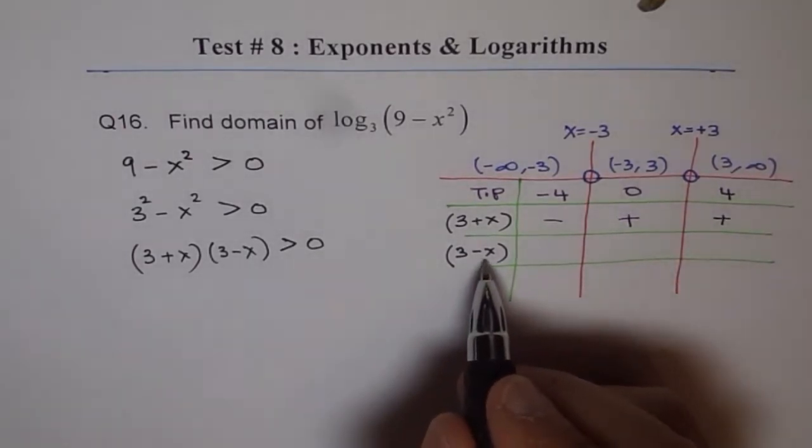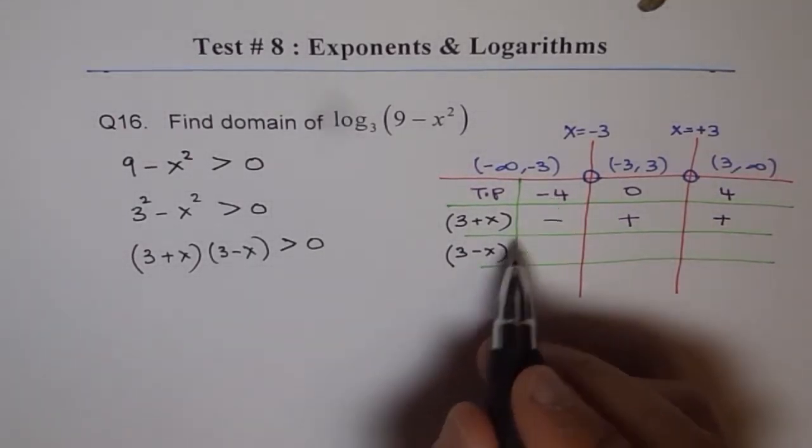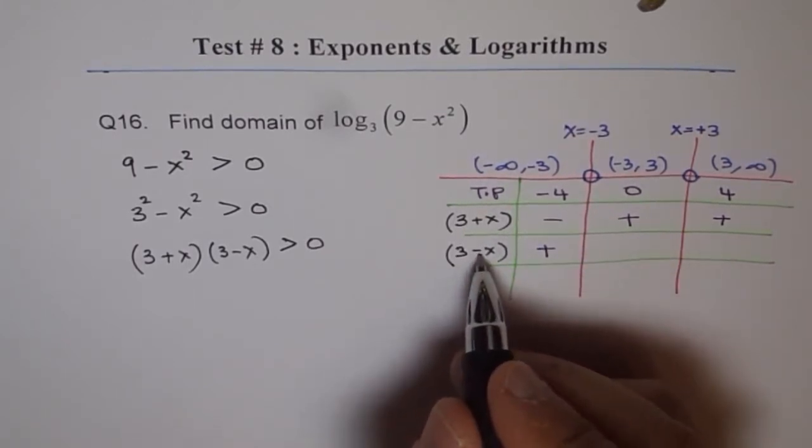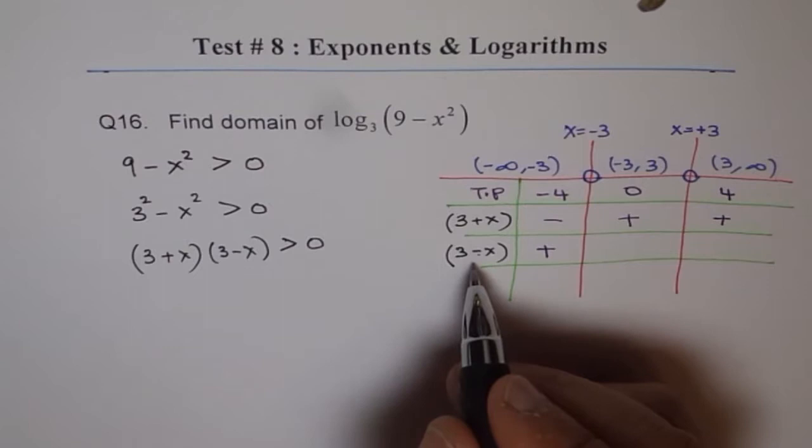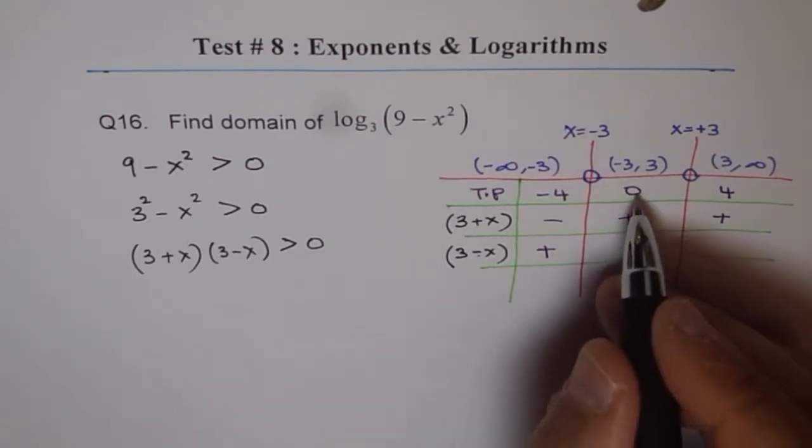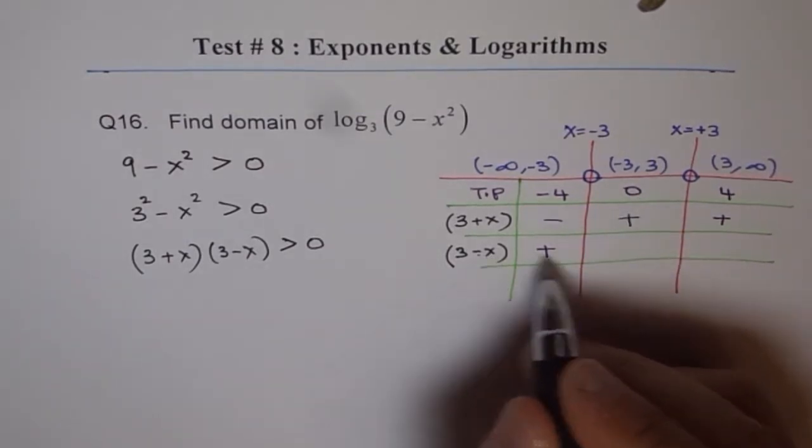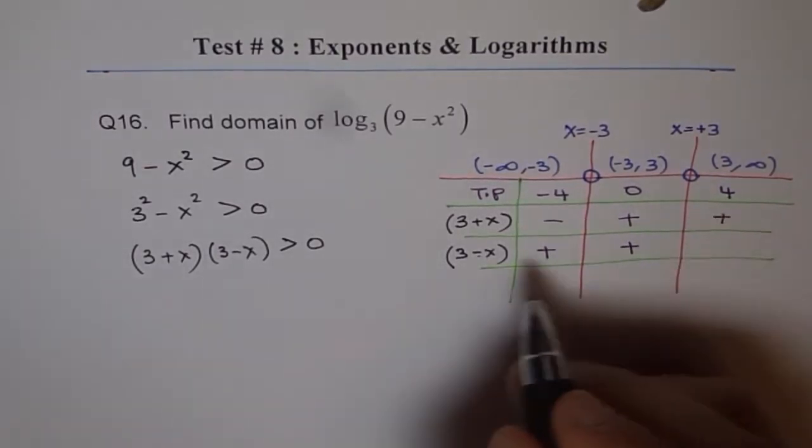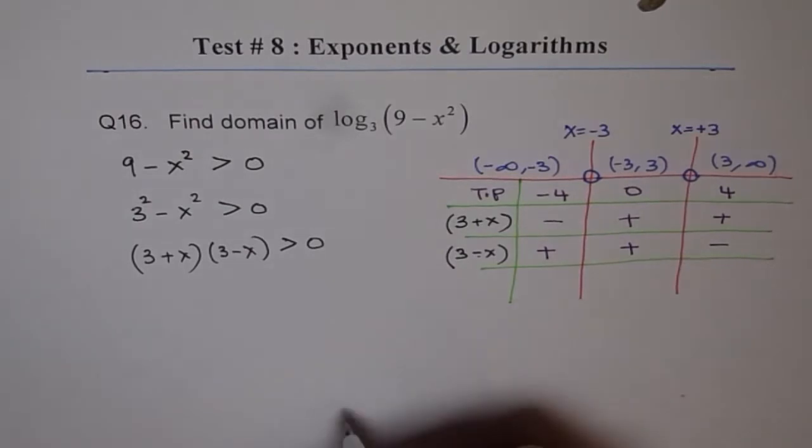Now this factor will be negative. No, this factor will be negative. If I write 4 it will become positive. 3 minus minus 4 will give us plus 7 which is positive. And 0 when you place for x, 3 is positive. And if you do plus 4 then 3 minus 4 will be a negative quantity.